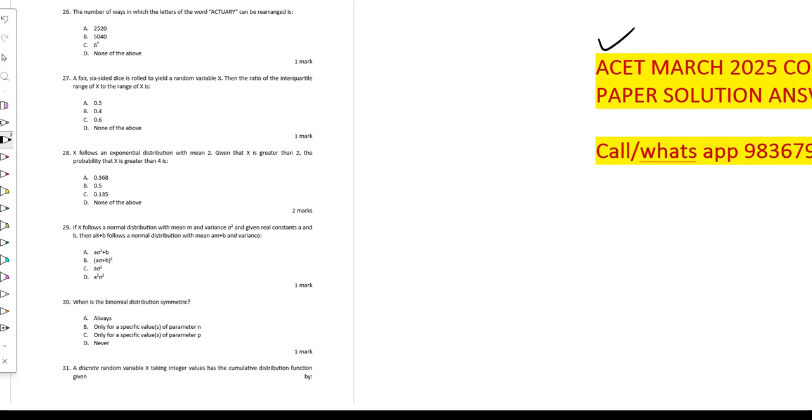Okay, so in this case, by the memorylessness property of the exponential distribution, probability of x greater than 4 given x greater than 2. So how to find it? It is obvious it is greater than x greater than 2, so that means e to the power minus 2 by 2, so that is e to the power minus 1, which is 1 by e.